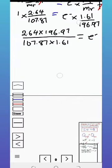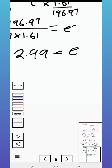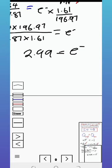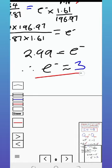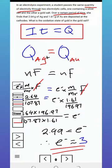Therefore, 2.99 is equal to the electrons. So therefore, E is actually equivalent to 3. So this is our final answer. From the question, basically what we're saying is that the oxidation state of gold is actually 3.